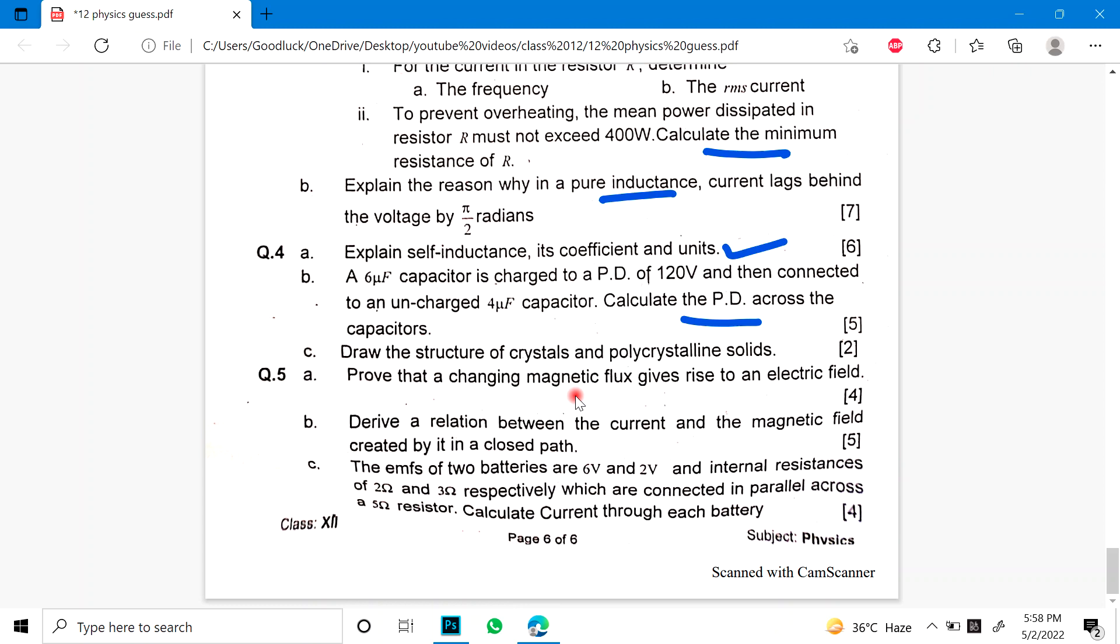Fifth is: Prove that changing magnetic flux gives rise to an electric field. This is such a note to write. B part is derive relation between current and magnetic field created by a closed path. And I think this will come from the Ampere law.